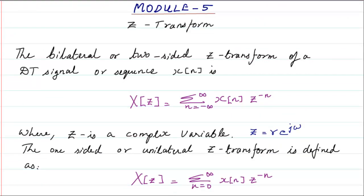The bilateral or two-sided Z transform of a discrete time sequence x[n] is given by the equation: X(Z) = Σ from −∞ to +∞ of x[n]·Z^(−n). Previously in DTFT we had e^(−jωn), but now instead we have Z^(−n), where Z is a complex variable represented in polar form as Z = R·e^(jω). So R·e^(jω) is written in short as Z, and Z is a complex variable having magnitude R and phase ω.